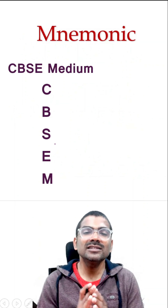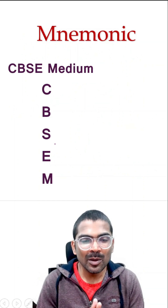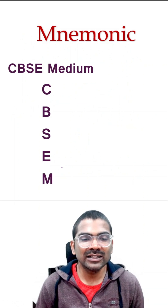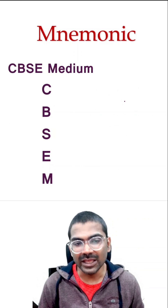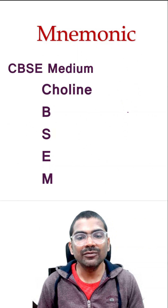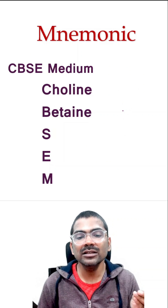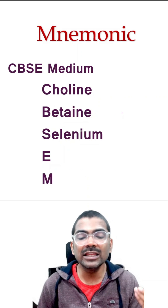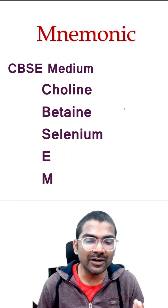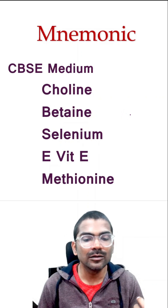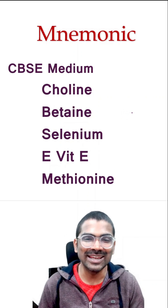The mnemonic to remember all the lipotropic factors is CBSE Medium: C for choline, B for betaine, S for selenium, E for vitamin E, and M for methionine.